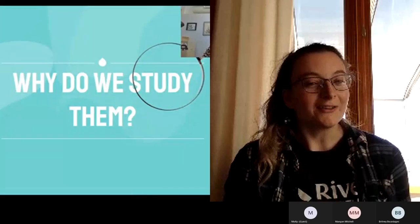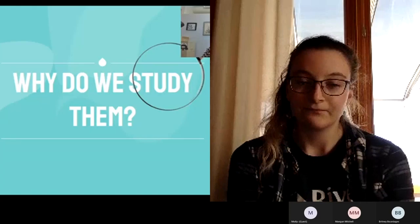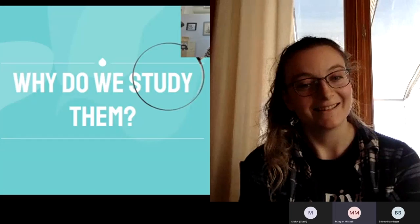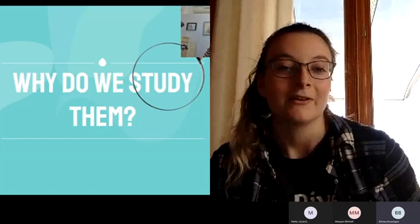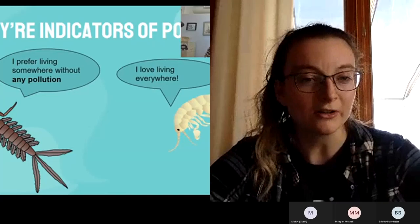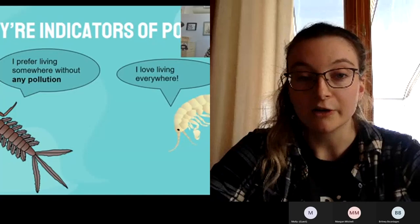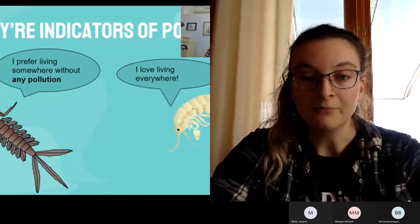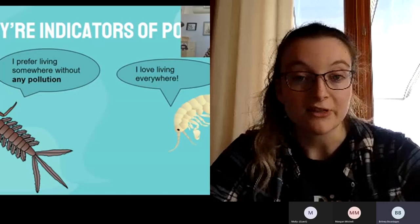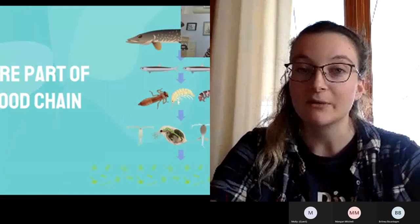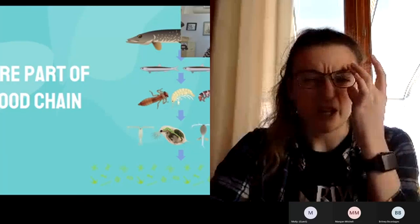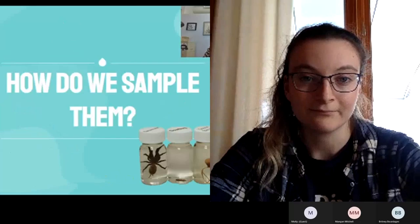So why do you think we study aquatic invertebrates at the River Institute? They let us know about contaminant loads — absolutely. They're bioindicators, so they let us know if an area is polluted. Here we have a mayfly nymph — they prefer living in areas without pollution, so they're quite sensitive. On the right side is an amphipod, which is more tolerant of pollution. They indicate whether an environment is healthy or not. They're also part of the food chain — without them, fish could not survive.